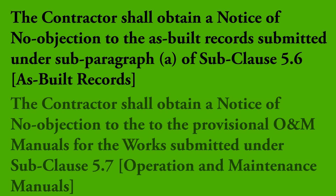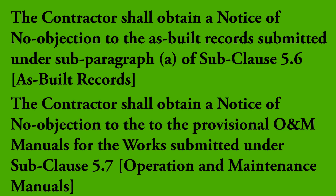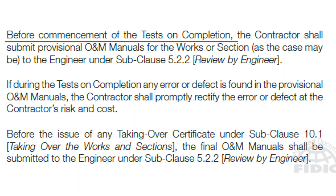Next, if the engineer has given or is deemed to have given a notice of no objection to the provisional O&M manuals for the works submitted under sub-clause 5.7, Operation and Maintenance Manuals, the contractor must obtain no objection for the provisional O&M manuals. Sub-clause 5.7 states that before commencement of tests on completion, the contractor shall submit provisional O&M manuals for the works or section — a similar procedure to the as-built records submission.